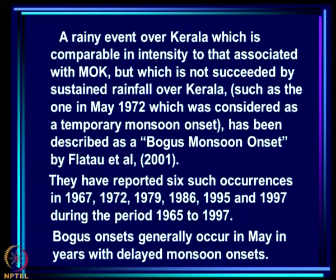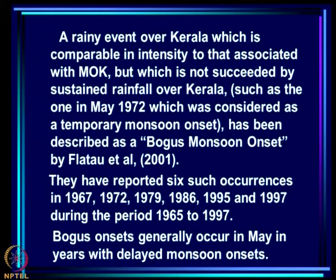A rainy event over Kerala comparable in intensity to MOK but not succeeded by sustained rainfall — such as May 1972 — has been described as a 'bogus monsoon onset' by Flatow et al. They reported six such occurrences during 1965–1997: in years 1967, 1972, 1979, 1986, 1995, and 1997. Bogus onsets generally occur in May in years with delayed monsoon onset.